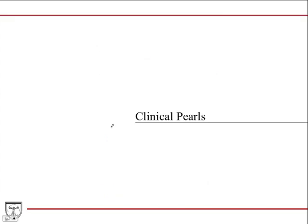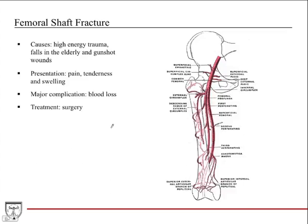Now for some relevant clinical pearls. Femoral shaft fracture — caused by high energy trauma, falls in the elderly, or gunshot wounds. Presentation is pain, tenderness, and swelling. Obviously breaking the thickest bone in the body causes a lot of pain and swelling. The major complication is blood loss because of all the blood vessels traveling in that region. Treatment: surgery is required.